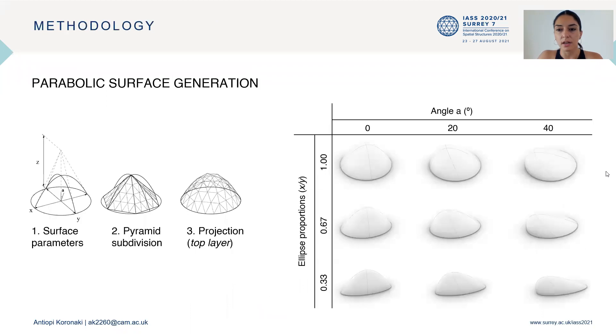Initially, a parabolic surface is designed to generate a series of doubly curved surfaces. The top layer of the space frame is designed through the projection of subdivided pyramid phases, as shown in the figure here. Then the parameters of the parabola are changed in order to create nine different configurations of doubly curved surfaces.